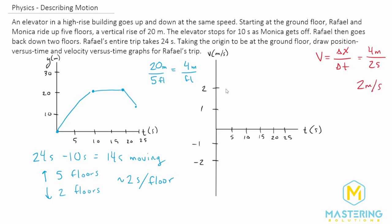So for the first 10 seconds, we're going to get the constant velocity, as we already said, of two meters per second.